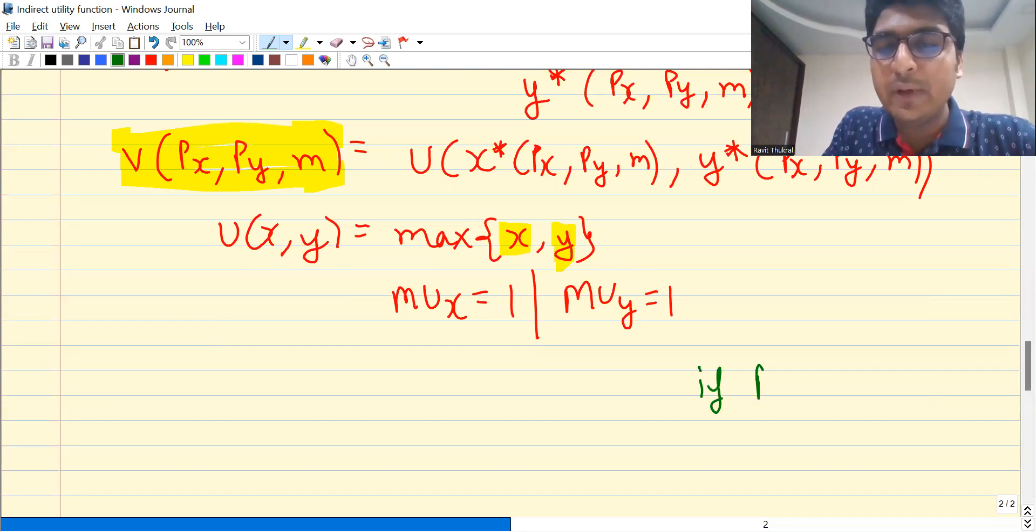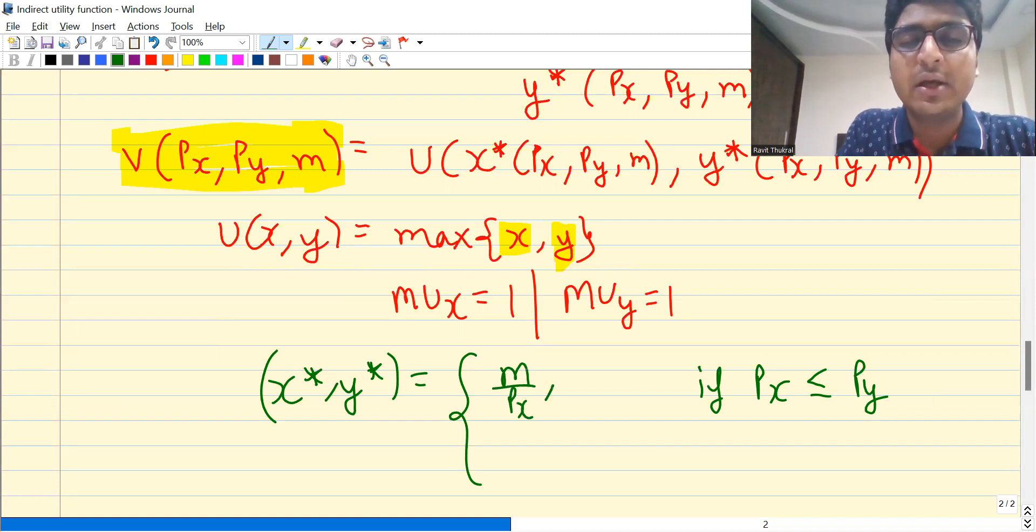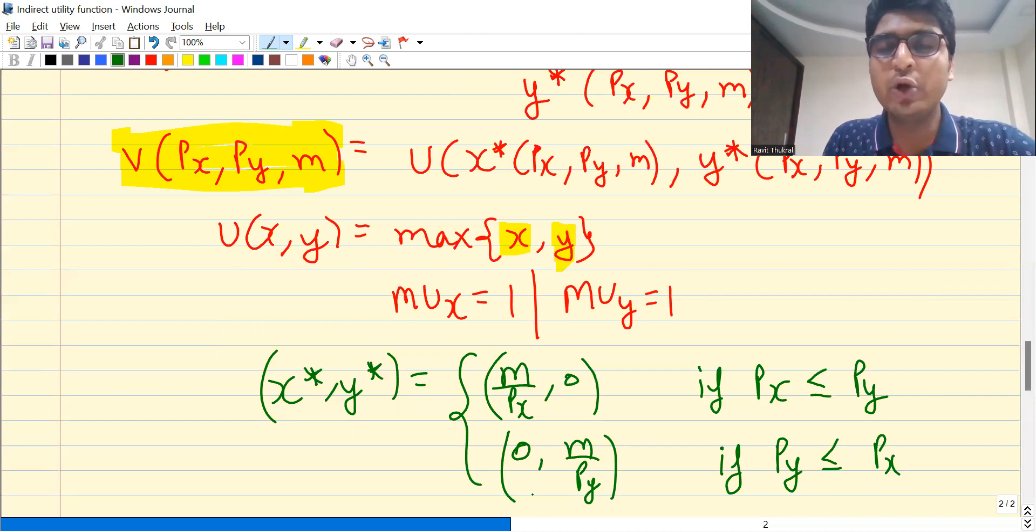So if Px is less than or equal to Py, then my optimal choice will be m by Px comma zero. And if good Y is cheaper than good X, then obviously I'll spend all of my income on Y. If the prices of both goods are equal, then in that case I can either go for m by Px comma zero or zero comma m by Py.